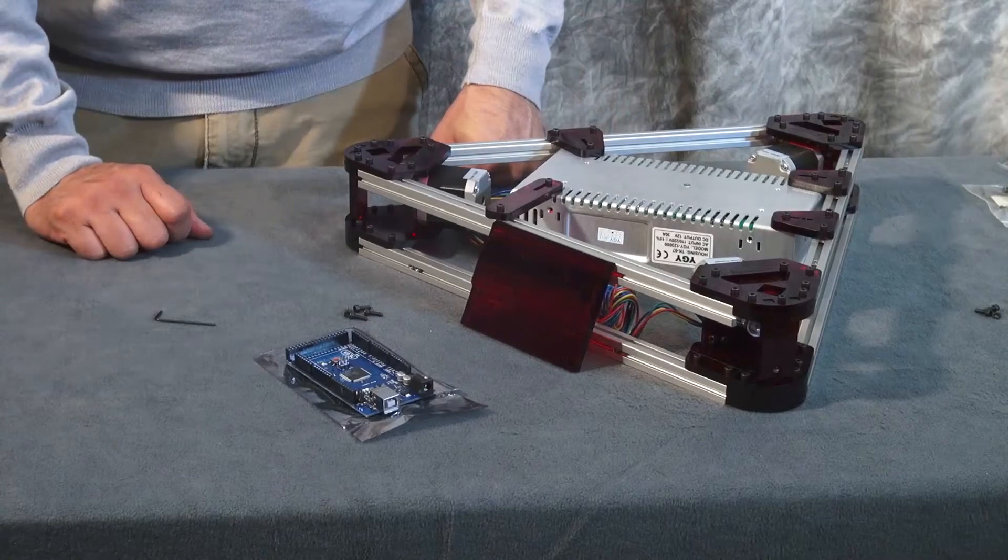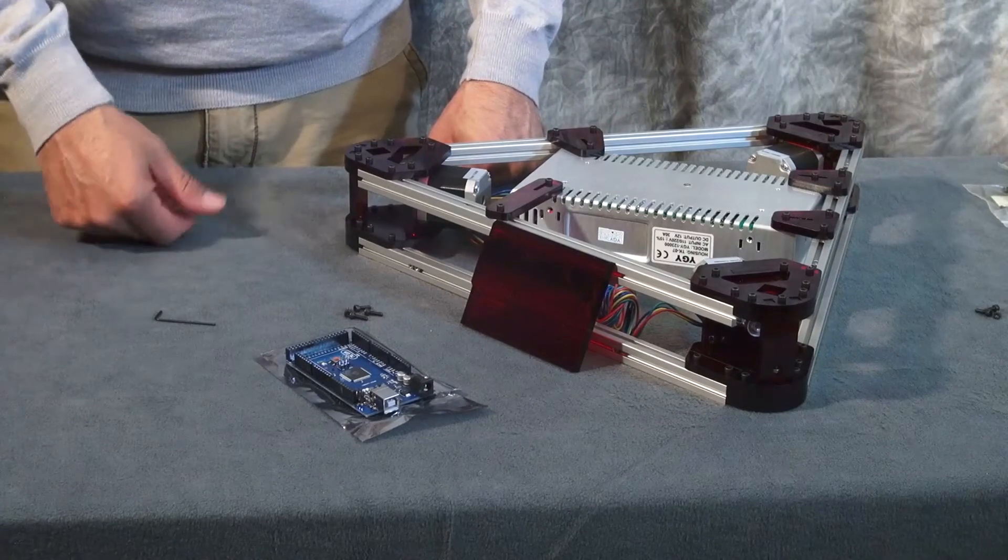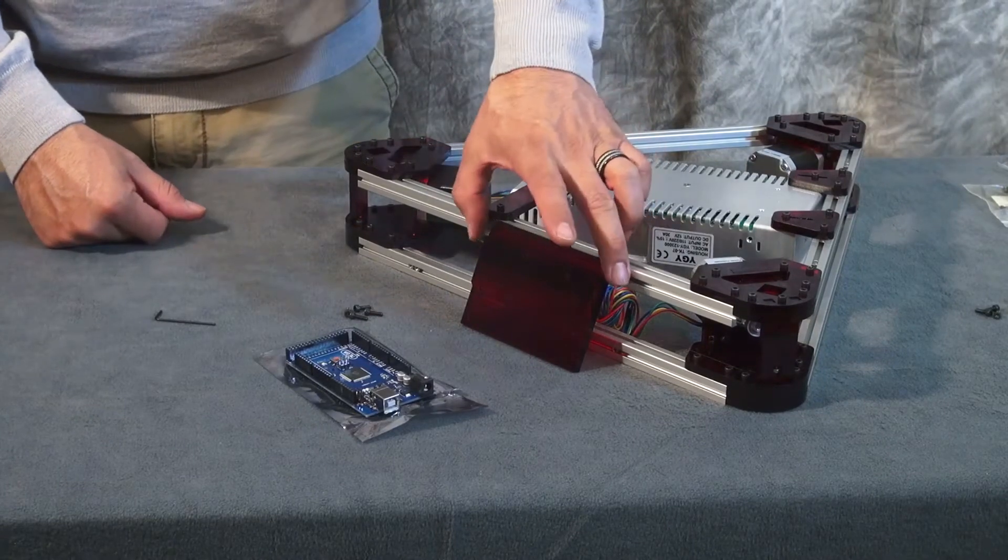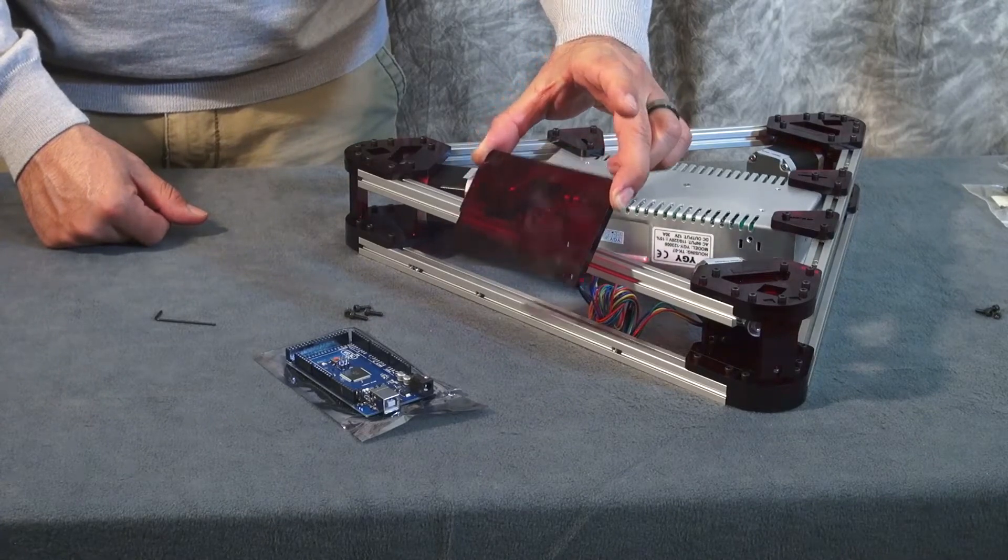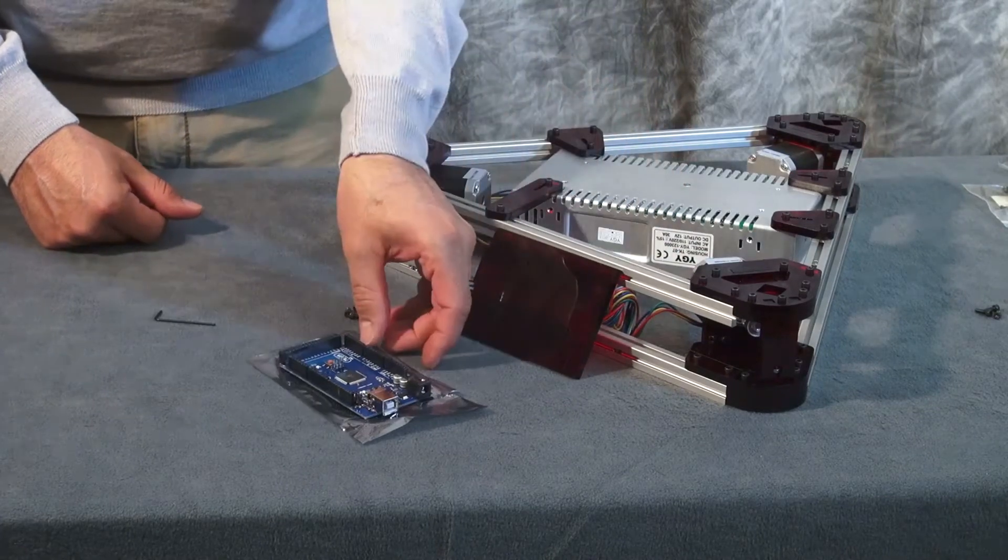So now we're going to install the Arduino board to the left side of the printer. And what you need for this is a large acrylic rectangular piece here, your Arduino board.